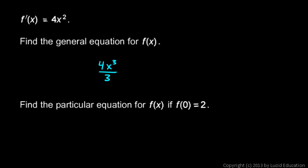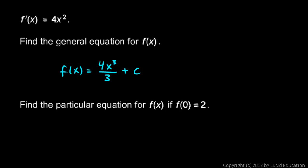So this is it — this is function f. f of x is 4x cubed over 3 plus c. That's the general equation. This c could be any number, so we don't have a specific equation for f. It could be any of these equations — an infinite number of possibilities.